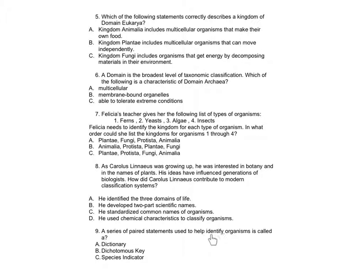Number 9: A series of paired statements used to help identify organisms is called: A: a dictionary, B: dichotomous key, C: species indicator.